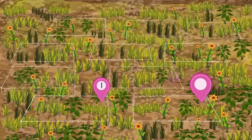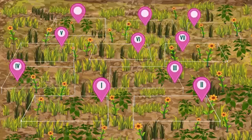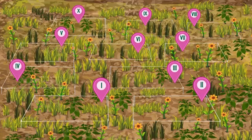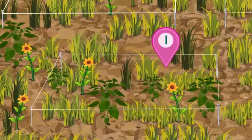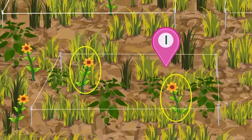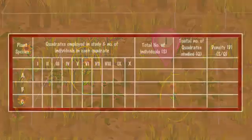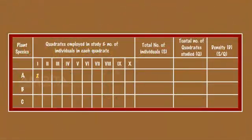Similarly, make nine more quadrats randomly in the site of study. Count the number of individuals of species A present in the first quadrat. Record the data in the table.